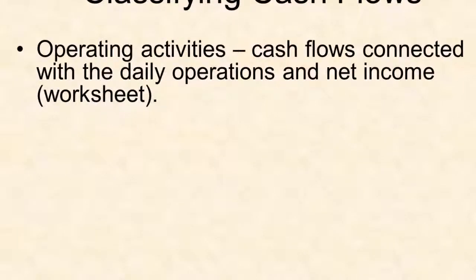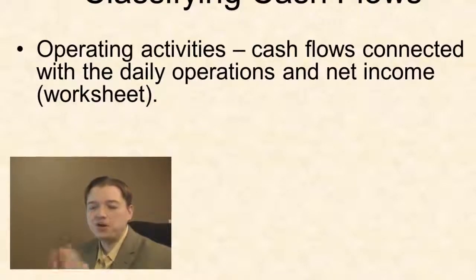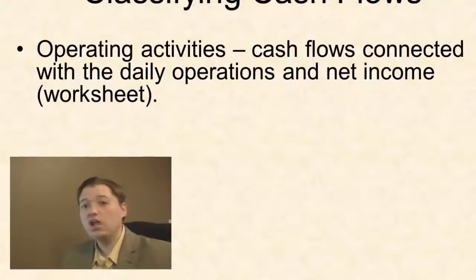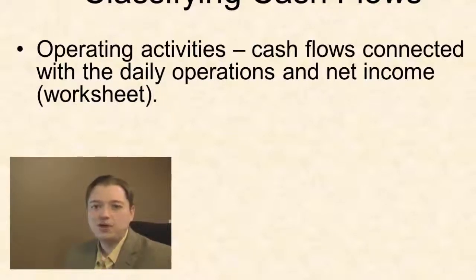First are operating activities. These are the cash flows from our day-to-day operations: buying and selling inventory, dealing with rent, taking care of our wages and our taxes, etc. All of that goes into our operating section. We really want it to match up with net income. There are a few things that end up in the operating section that you might think should go somewhere else, but they don't — we want it to match up with net income, and we build this whole section using the worksheet from our discussion of the accounting cycle. If you haven't done that, you might want to go back and do that discussion first.